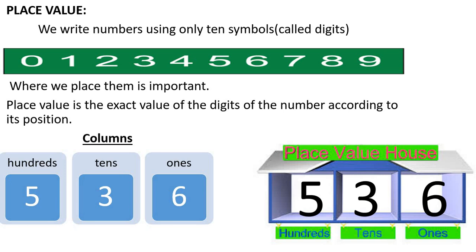Students, this is the place value house. There are 3 rooms in it. One room is for ones, one room is for tens, and one room is for hundreds. This is 536. Students, please keep this in mind — they cannot change their room. If they change their room, they will change their value. So remember, when numbers are in different places, they have different values.